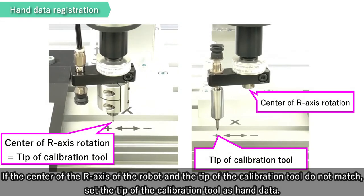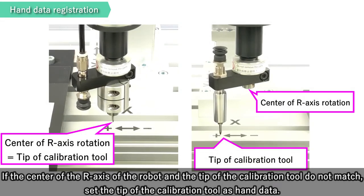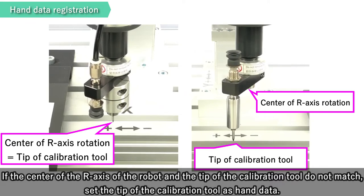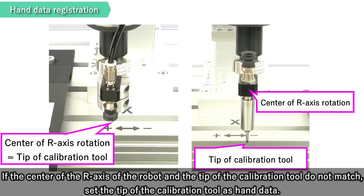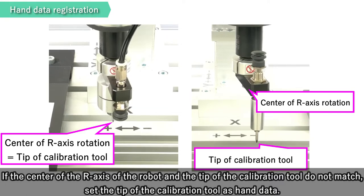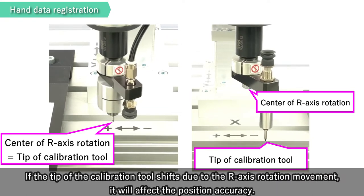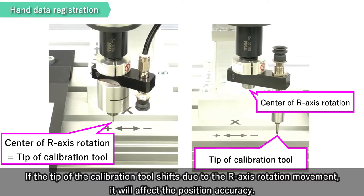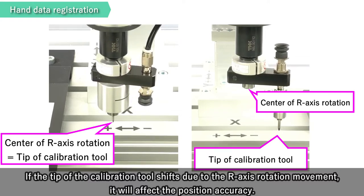If the center of the R-axis of the robot and the tip of the calibration tool do not match, set the tip of the calibration tool as hand data. If the tip of the calibration tool shifts due to the R-axis rotation movement, it will affect the position accuracy.